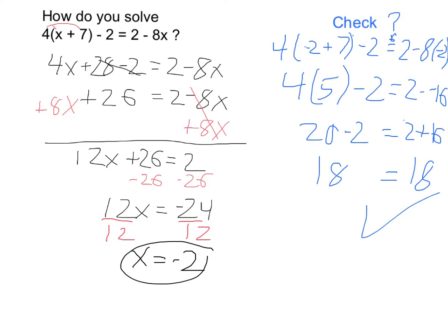Again, this was a process of simplifying, first by doing the distributive property. Down here, I got all my x's on one side, and finally, I solved for the x. I got the x alone, and it came out to the negative 2.